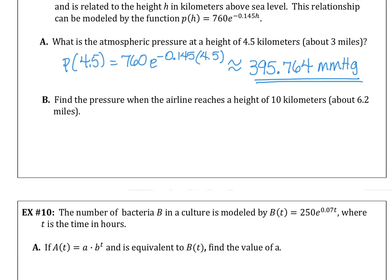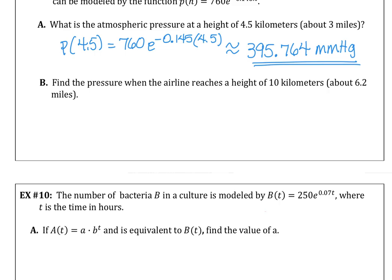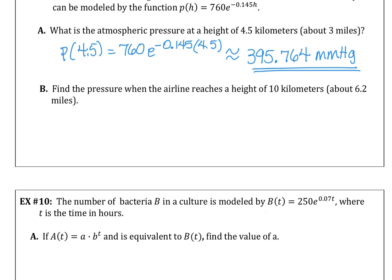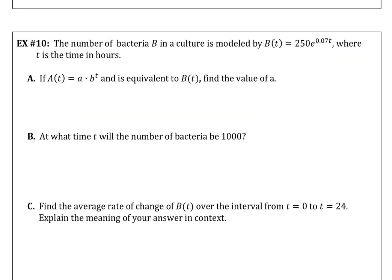Find the pressure when the airline reaches a height of 10 kilometers. Substituting 10 in there, 178.273 millimeters of mercury. We have two more examples to go.